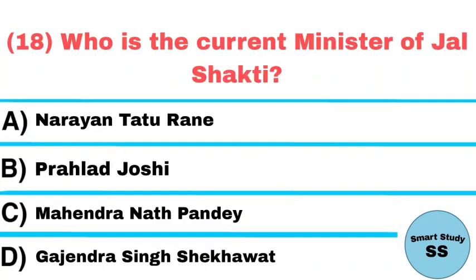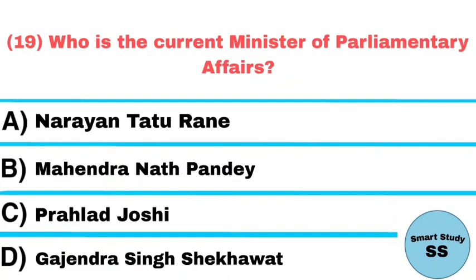Question number 18: Who is the current minister of Jal Shakti? Answer: Gajendra Singh Shekhawat. Question number 19: Who is the current minister of Parliamentary Affairs? Answer: Prahlad Joshi.